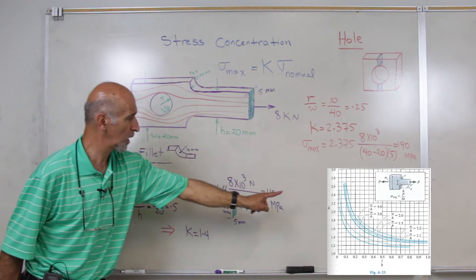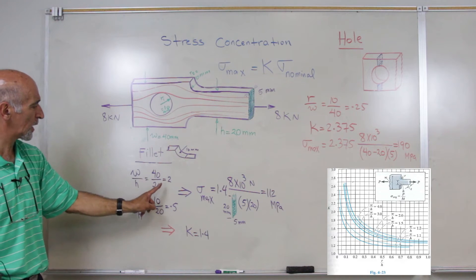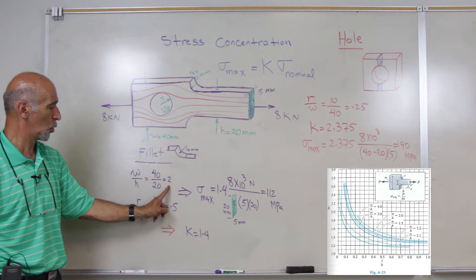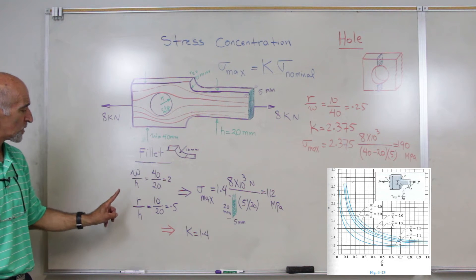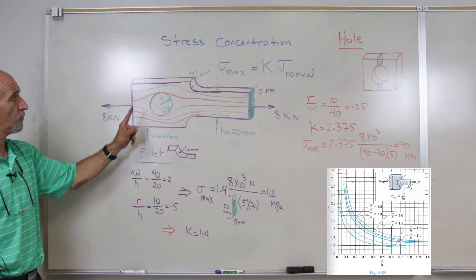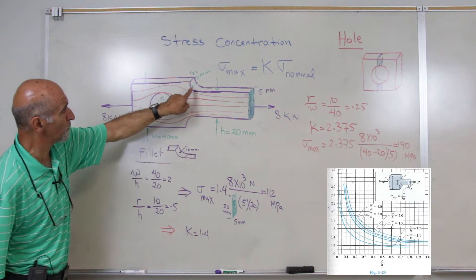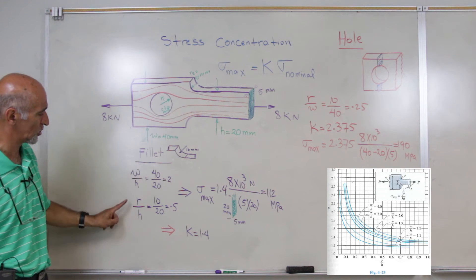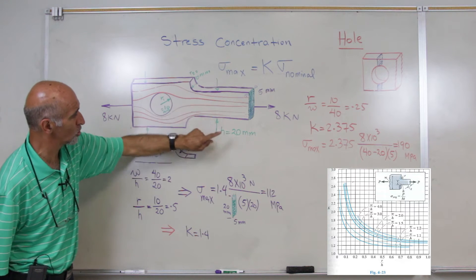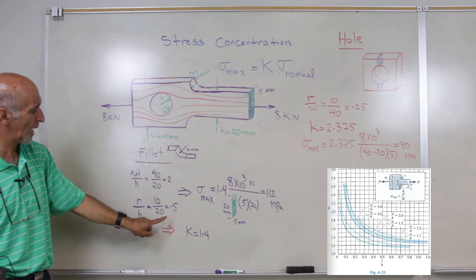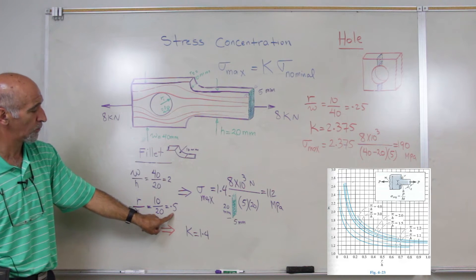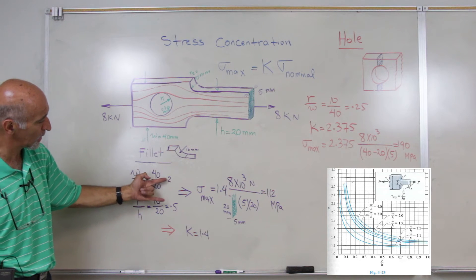So in the figure here, we will pick W over H as 2, and then we will have to also calculate R, which is the fillet size, which is 10 mm, divided by the H, which is 20 mm, and we calculate to be 0.5. Now combining these two and taking the graph here,